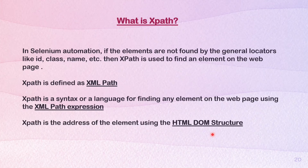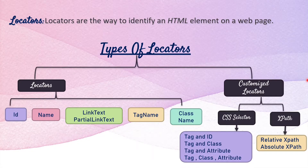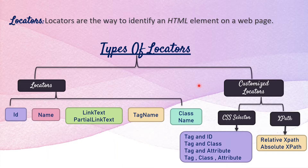Let us understand what is XPath. It is a part of a locator. We have different types of locators as discussed in the previous tutorial — ID, name, link text, partial link text, tag name, class name, and CSS selector. We are left with XPath. There are different types of XPath: relative XPath and absolute XPath, and they come under the customized locators. Locators are the way to find an HTML element on a web page. XPath is used when we don't have the ID, name, or tag name locators present in the HTML.